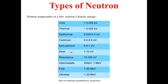So these are all the possible types of neutrons and their possible energy ranges. These neutrons are classified according to their energy. That's all we have for the different types of neutrons with respect to their energy.